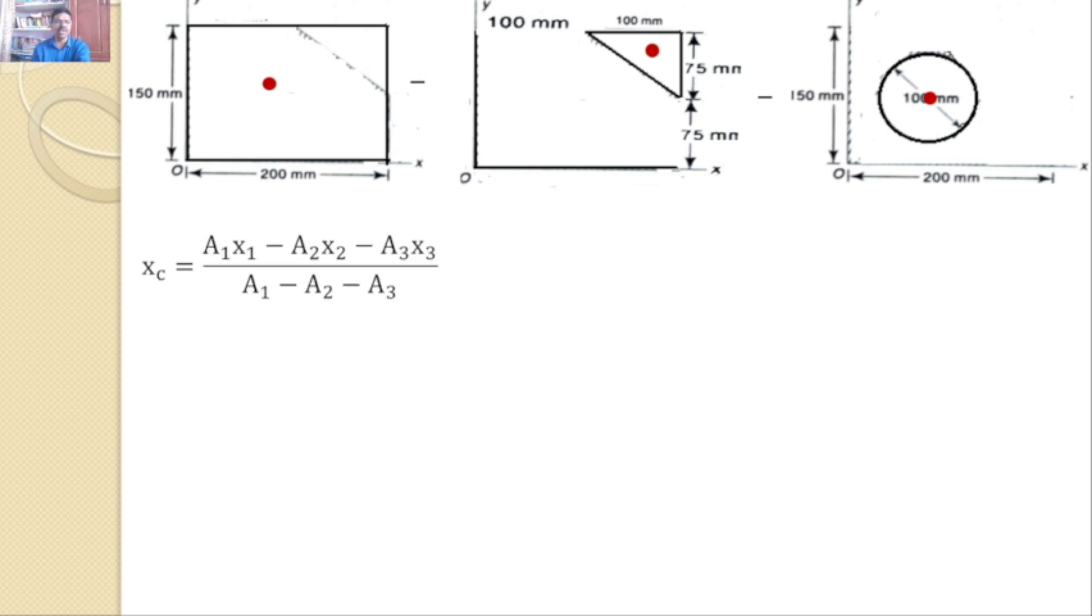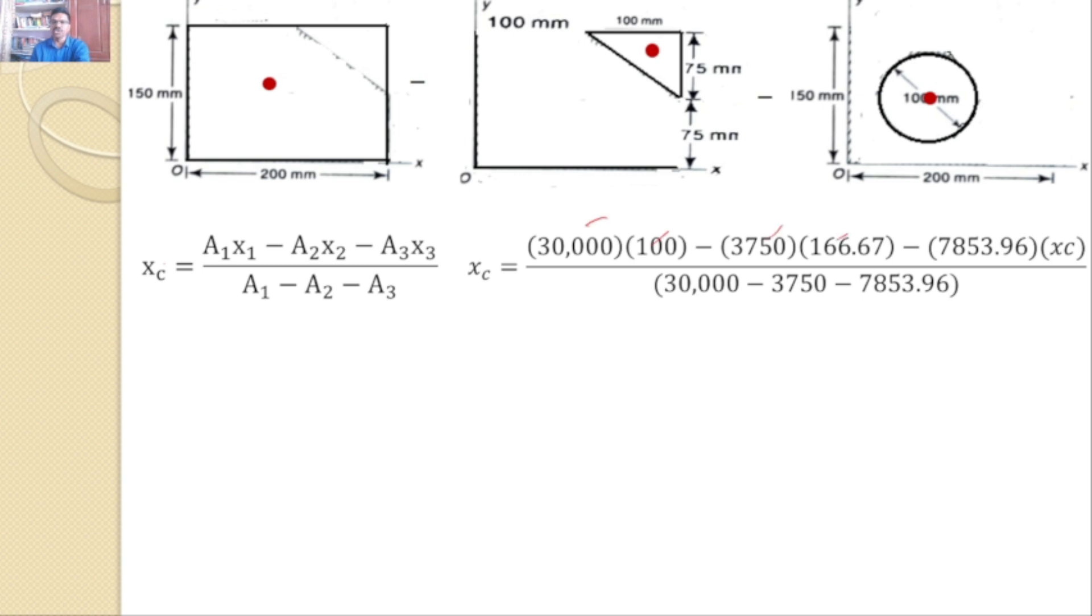Now I will substitute in the formula. xc is equal to A1·x1 minus A2·x2 minus A3·x3, divided by A1 minus A2 minus A3. Now I know all these values. So I will substitute A1·x1, A2·x2. Coming to A3, I know the area, but the centroid for the circle is nothing but the centroid of the composite area. That's why this xc becomes this.